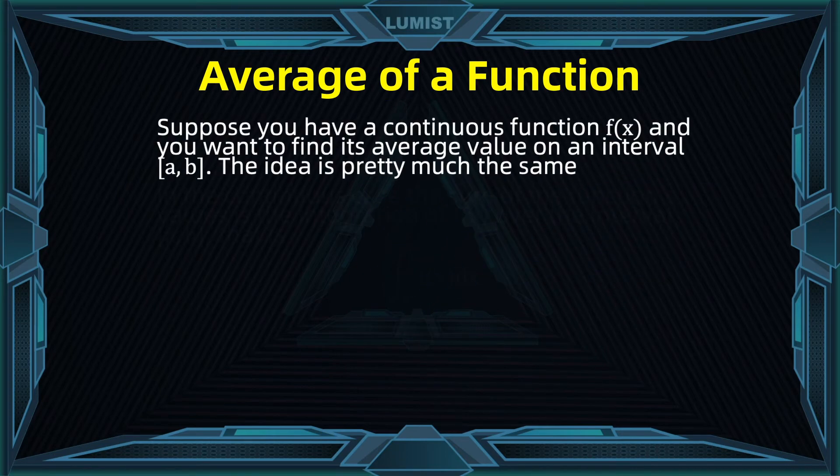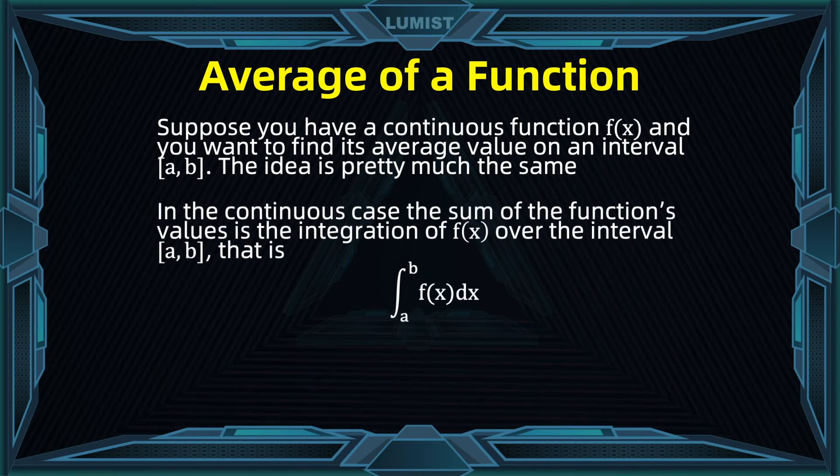Suppose we are given a continuous function f of x and we want to find the average value on an interval a, b. The idea is pretty simple and it follows the same pattern. We are going to divide two quantities. In the numerator, we are going to add all the values of f. To do that, we compute the integral from a to b of f of x times dx. Recall that when we go from the discrete case to a full interval, summation is thought of as the integral.